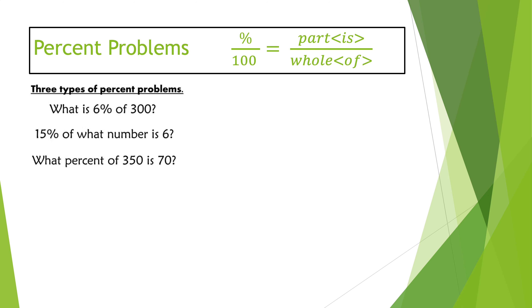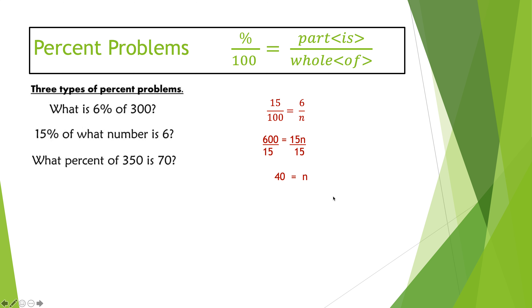Remember what's linked together: the 15 and the percent, the 'of' and the 'what number' (that's the variable), and the 'is' and the six. Setting up the proportion: 15 goes in the percent place, six goes in the part or 'is' place, and the whole or 'of' is n on the bottom. Cross multiplying gives 15n equals 600. Dividing by 15 gives n equals 40.